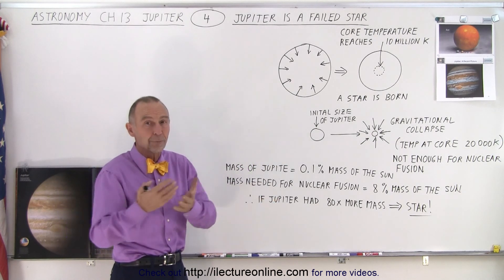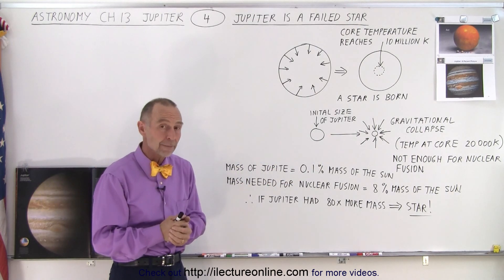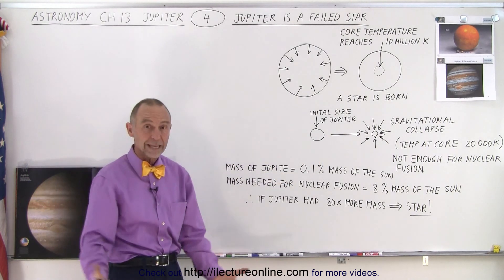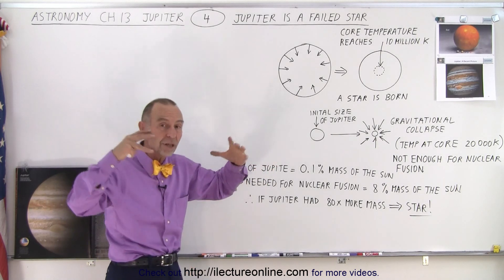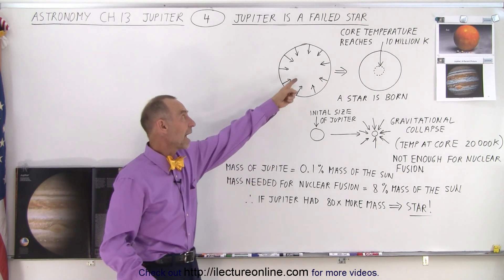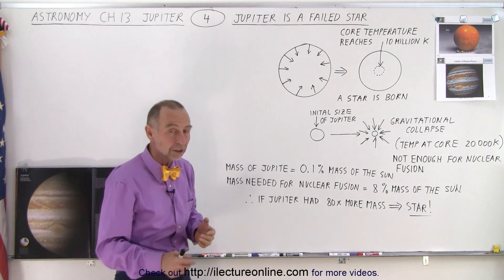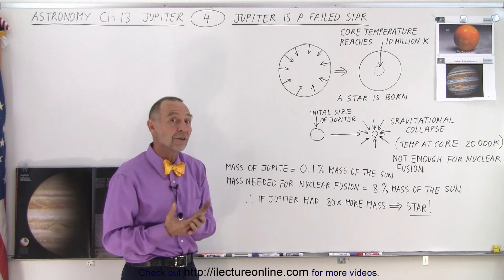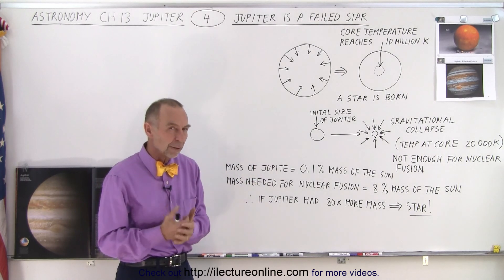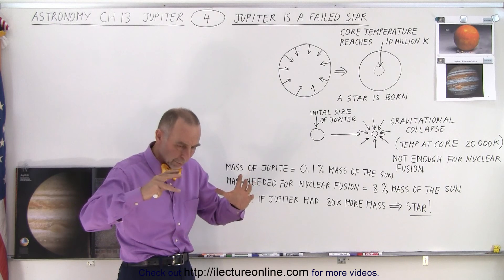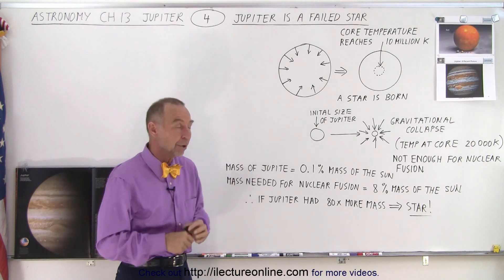Our Sun at some point was probably a hundred times the radius it currently is, because it was this big ball of gas that then slowly compressed. Gravity will then continue to compress it, reaching higher and higher pressure and higher and higher temperatures, which would then generate more radiation coming from that protostar. So the protostar would become smaller due to gravity and become hotter because of the compression.